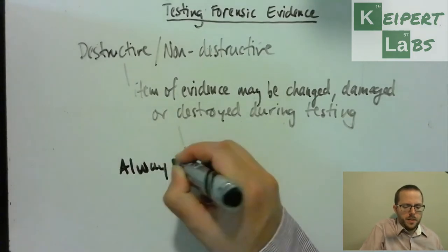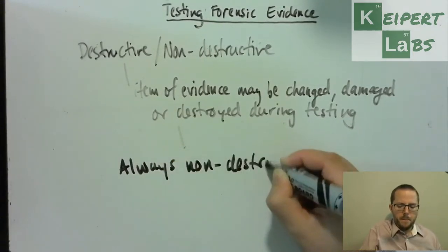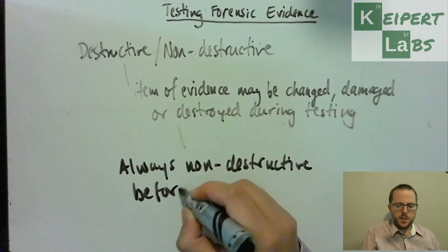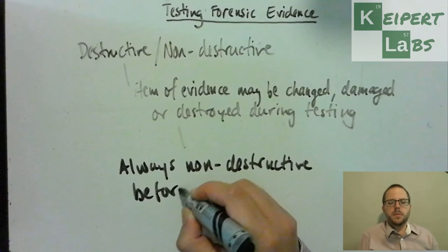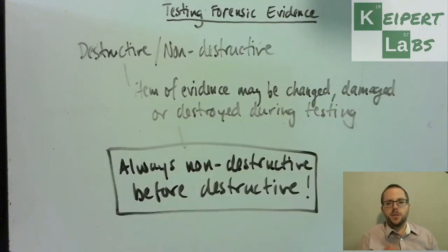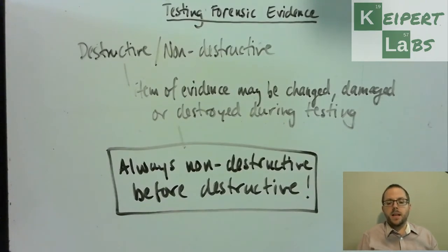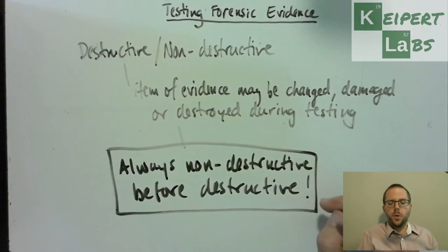The principle is always non-destructive before destructive. If you have a very small sample and you have to potentially destroy it in order to get extra information, you must do everything else first — all that can be done, needs to be done, and ought to be done — because you can't go back afterwards. You've got to make sure you've exhausted all the possibilities before you consider destroying the whole sample. We follow the principle of doing all possible non-destructive tests first before doing anything destructive.